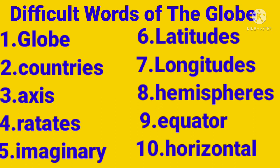Second one is countries, C-O-U-N-T-R-I-E-S, countries. Next is axis, A-X-I-S.